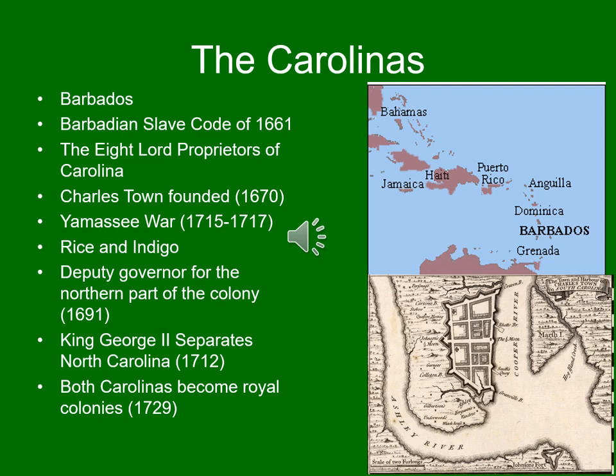These early colonists fought a two-year war with the Yamasee tribe in South Carolina, driving them out in what was known as the Yamasee War. The northern part of the colony was difficult to access with poor communications; as early as 1691 they appointed a deputy governor for the northern part, which developed very differently — more like Virginia immediately to the north. In 1712 King George the Second officially separated North Carolina from South Carolina, and they became two colonies. In 1729 the king converted both Carolinas into royal colonies. The founding of the Carolinas is once again the story of how large Caribbean-style plantation slavery was transported from Barbados to the United States.